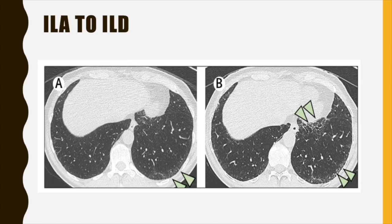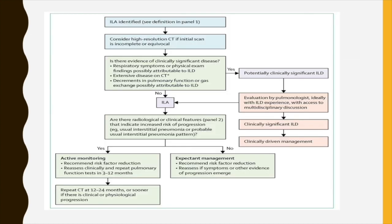The paper also illustrates how ILA can progress to ILD, with a prone high-resolution CT showing subpleural lung abnormality primarily as ground glass that can progress further. A management flowchart is provided: upon identification of ILA, perform a CT if not already properly done, assess whether it fits an ILD classification, and if not, label it as ILA. The patient is then actively monitored, with some requiring expectant management and risk factor reduction with reassessment.